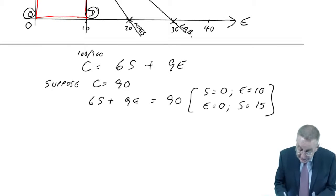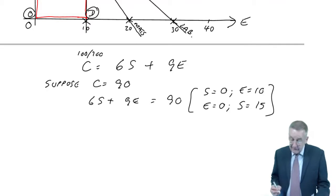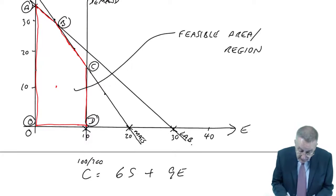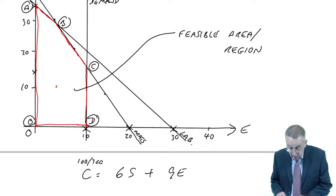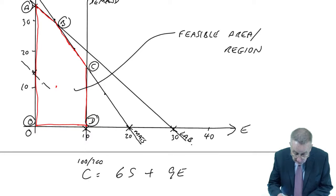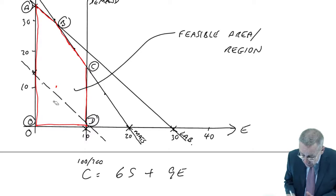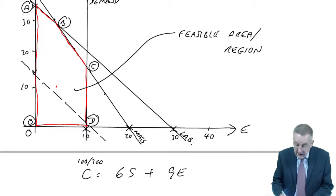S0 and E10 is there. E0 and S15 is about there. Join them up. And I'm deliberately doing a dashed line to make it clear. This isn't a constraint. This is my objective line.